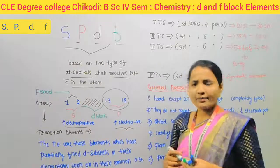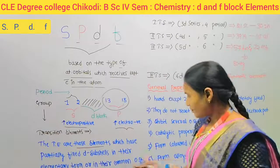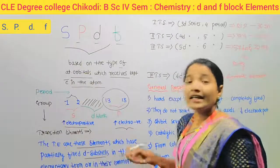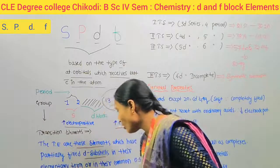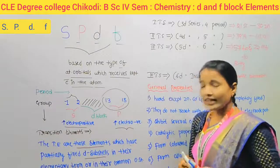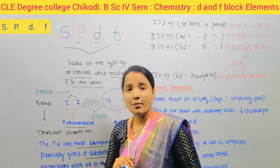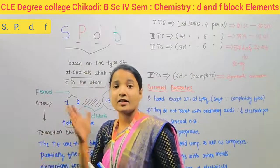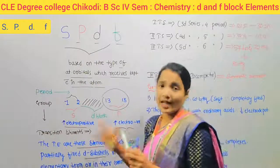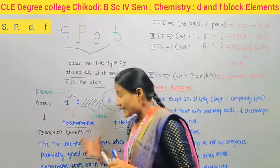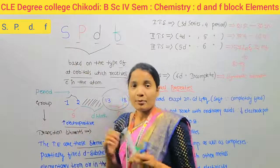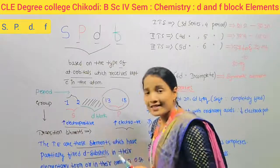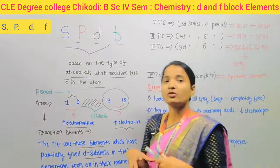Transition elements are those elements which have partially filled D-subshells in their elementary form or in their common oxidation state. But except cadmium, zinc, and mercury — because these three have completely filled orbitals, therefore these three are not considered transition elements.